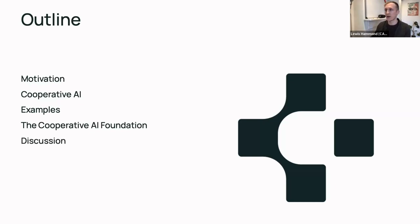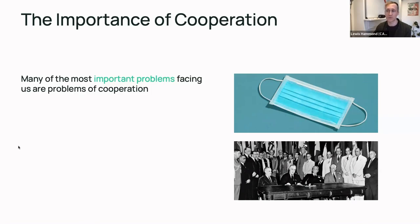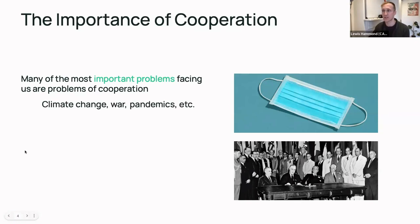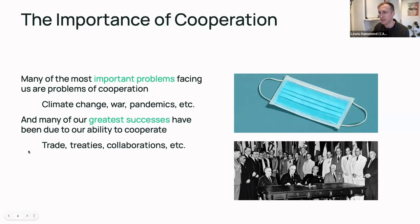The first motivating big-picture claim — which is hopefully not particularly controversial — is that cooperation is extremely important. Many of the most important problems facing us as a species and civilization are problems of cooperation: things like climate change, war, pandemics, and the governance of emerging technologies. At the same time, many of our greatest successes have also been due to our ability to cooperate — things like trade, treaties, various kinds of collaboration, and so on.